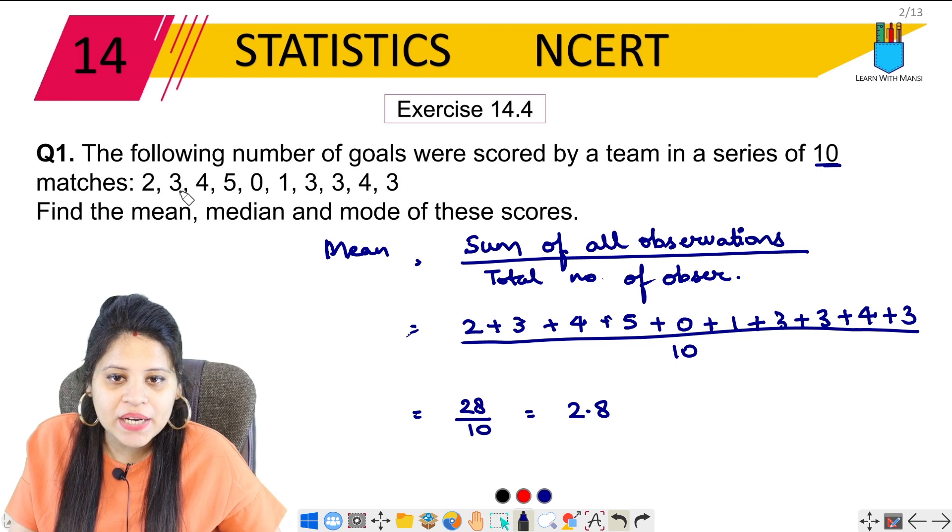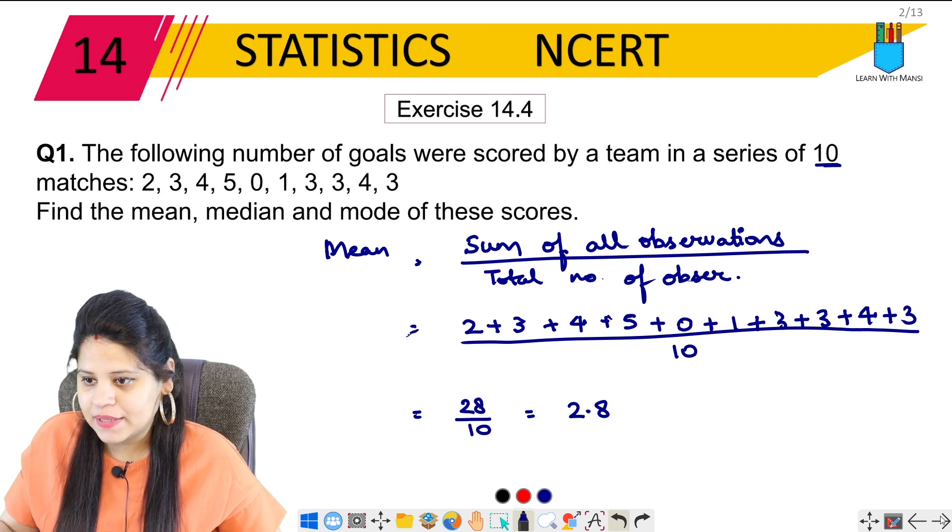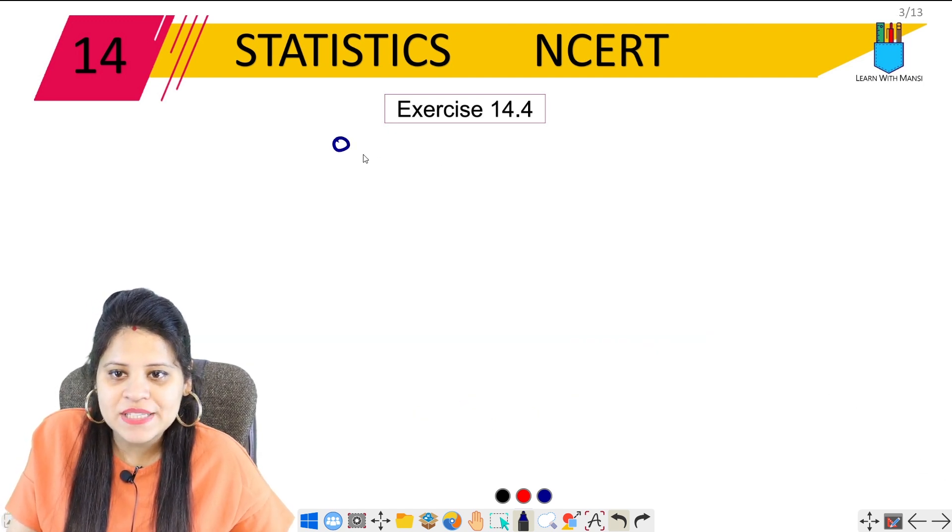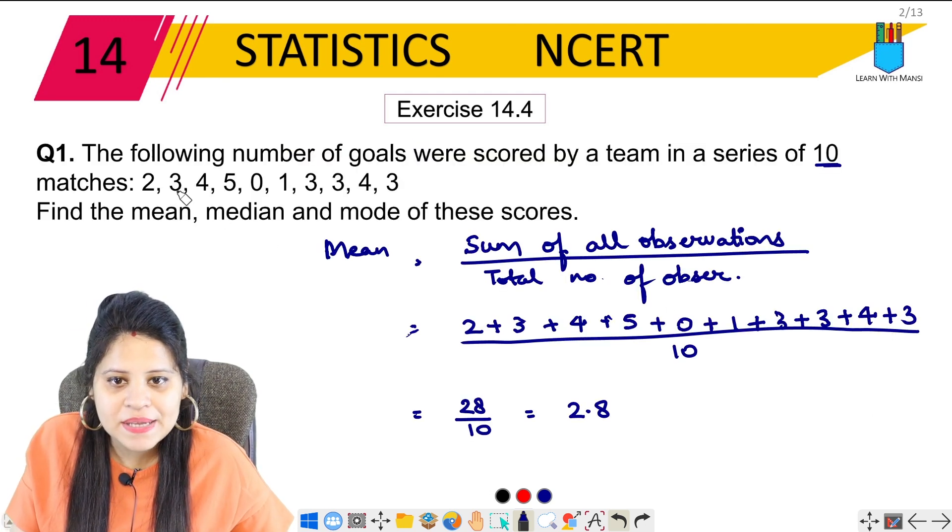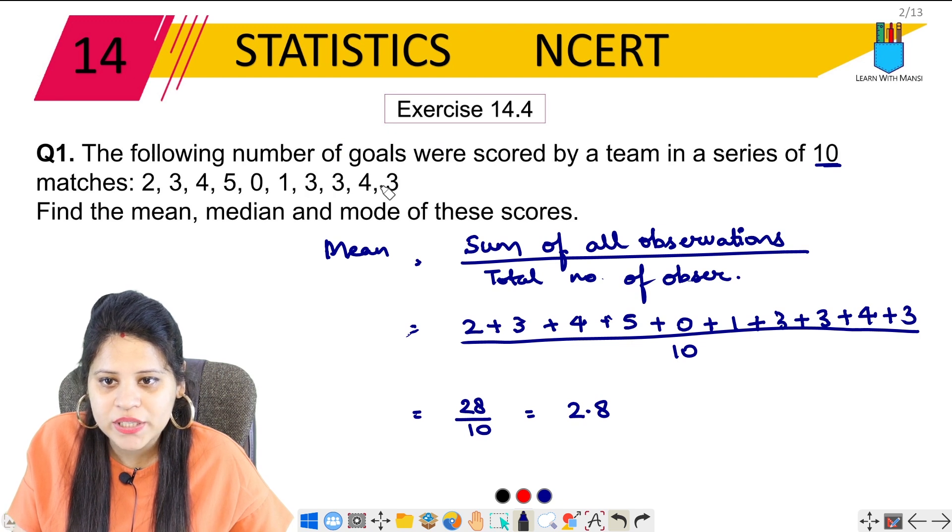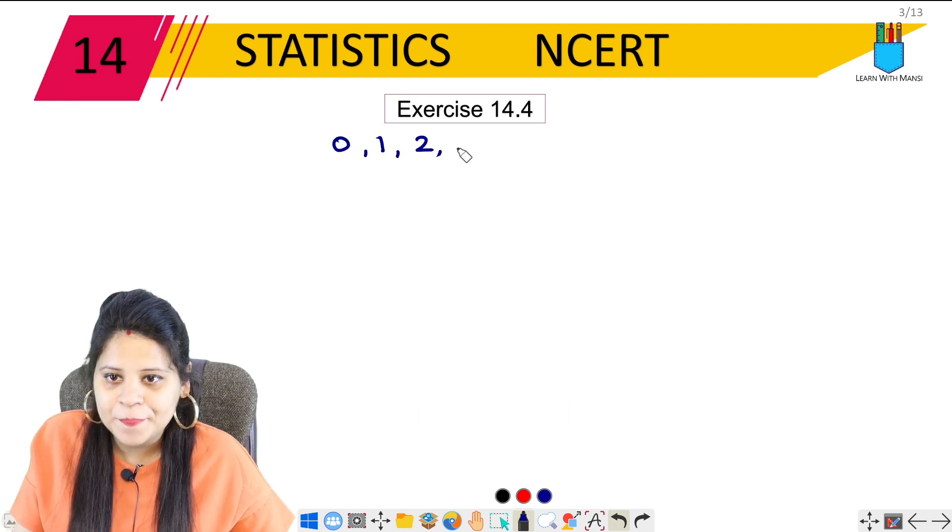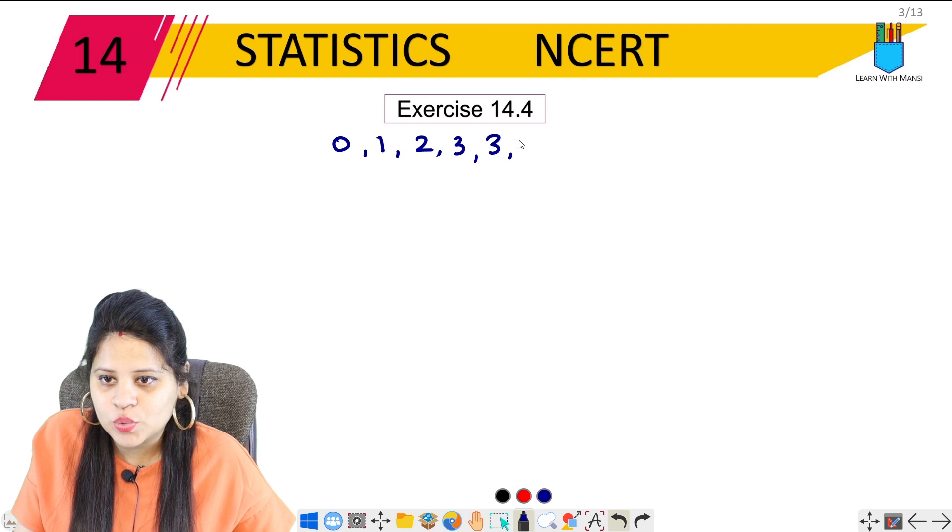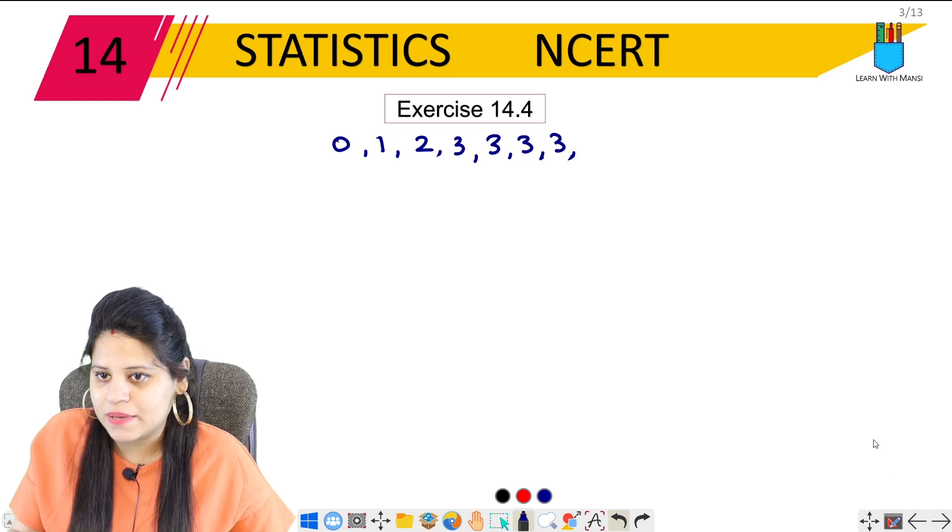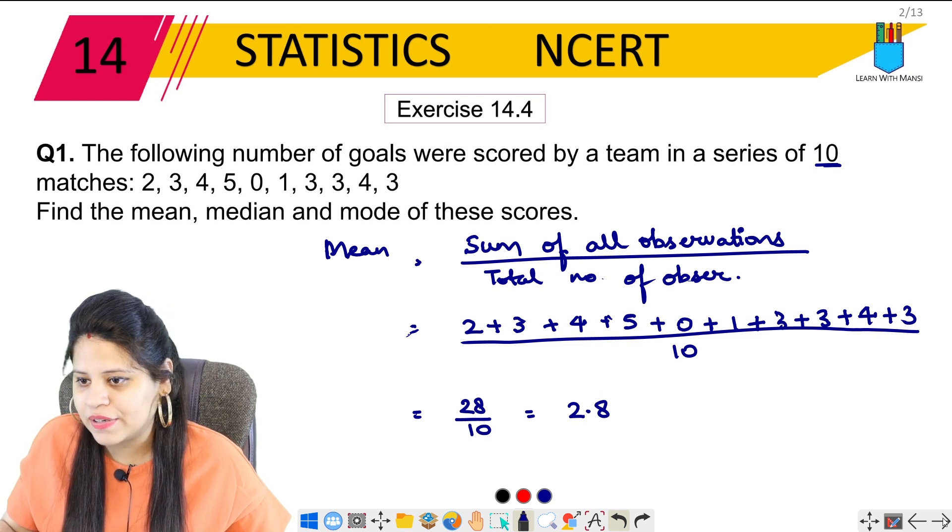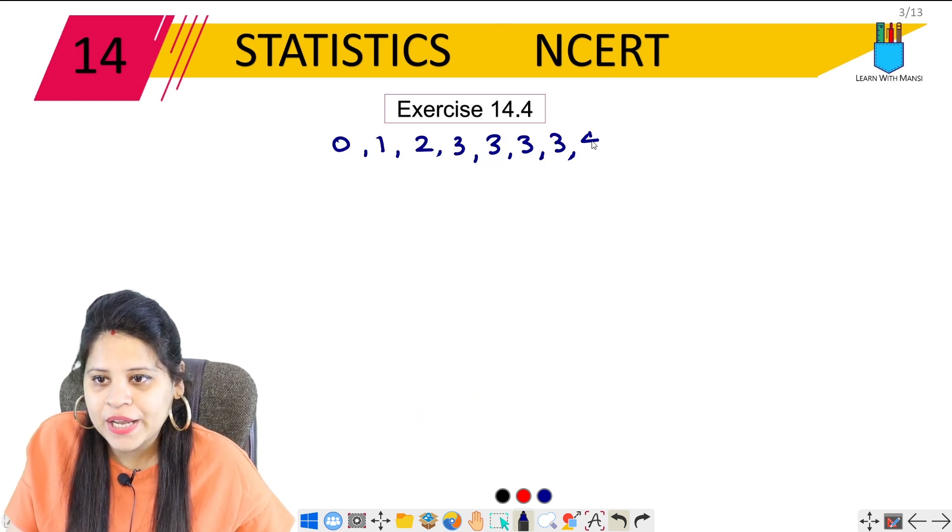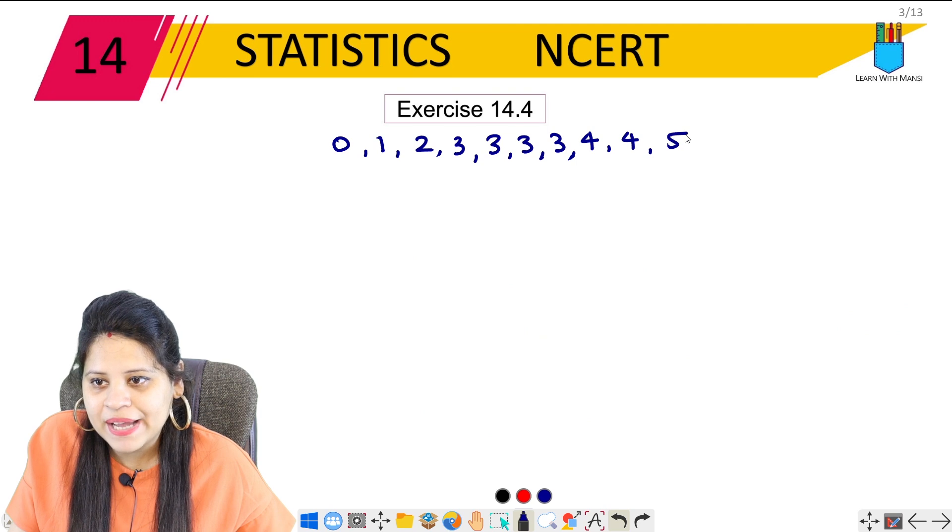We have to arrange it in ascending order. So 0, 1, 2. Here we have 0, 1, 2. 3 is 1, 2, 3, 4 times. Yes, 1, 2, 3, 4 times. Then we have 4 is 2 times and then 5. So 4 is 2 times and then 5.